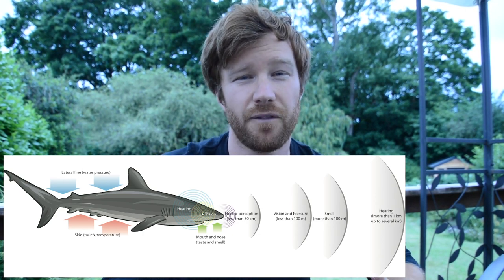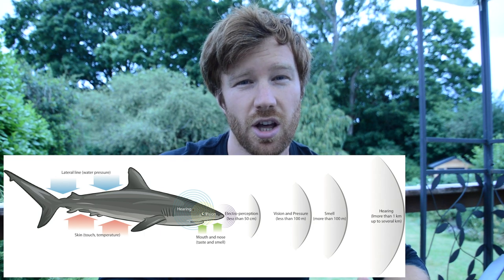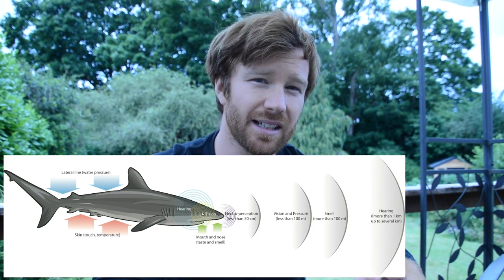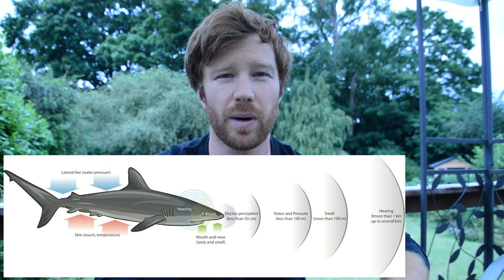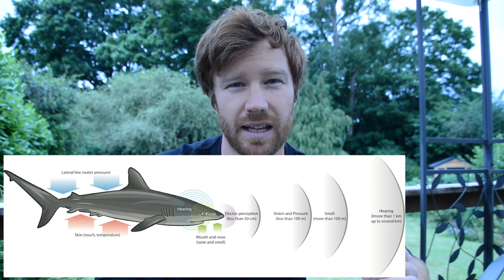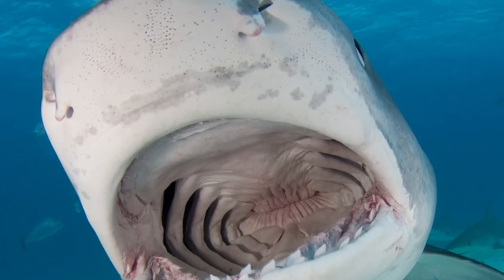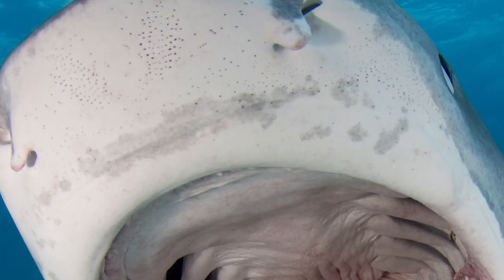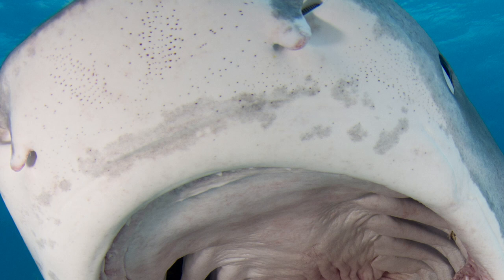Finally, sharks can also sense vibrations and water pressure changes through what is called their lateral line — a line of minute hair-like cells that runs from the tip of their nose all the way down the side of the shark to their tail. These hair-like cells detect pressure changes and vibrations, helping them detect injured or panicking fish to hunt. Here you can see this amazing tiger shark coming in close to the camera, and you can see those tiny black dots on its nose — those are the ampullae of Lorenzini, which detect these electrical impulses.